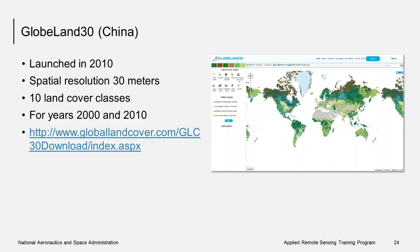In 2010, China launched the Global Land 30 mapping project, producing a land cover map with 10 classes for 2000 and 2010 at 30-meter spatial resolution. The data can be visualized and downloaded from the website listed here.